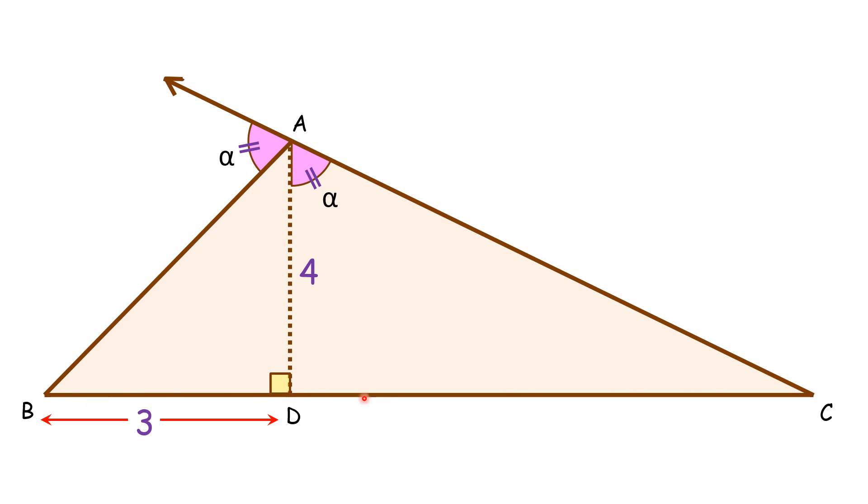For that, we'll consider triangle ABD. It is a right-angle triangle, so by Pythagorean theorem, the length of BA will be 5 centimeters. Let's do a construction from point D. Let's draw line segment DE such that DE is parallel to CA.